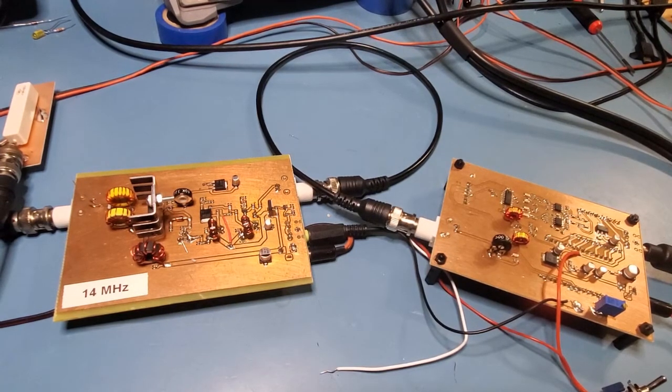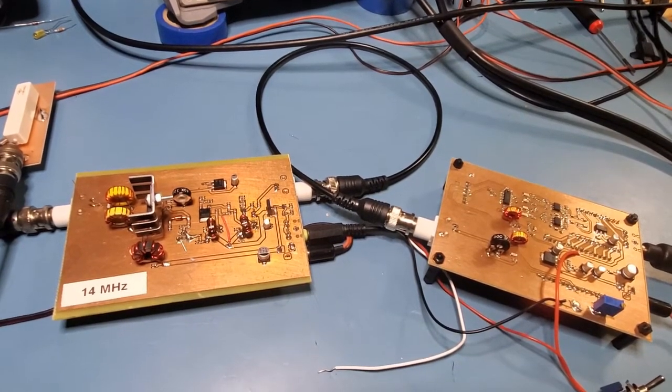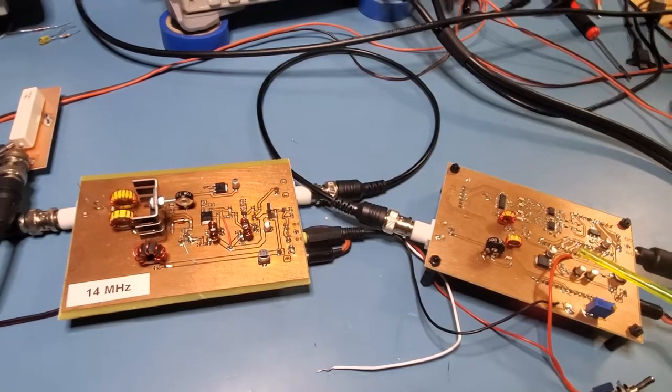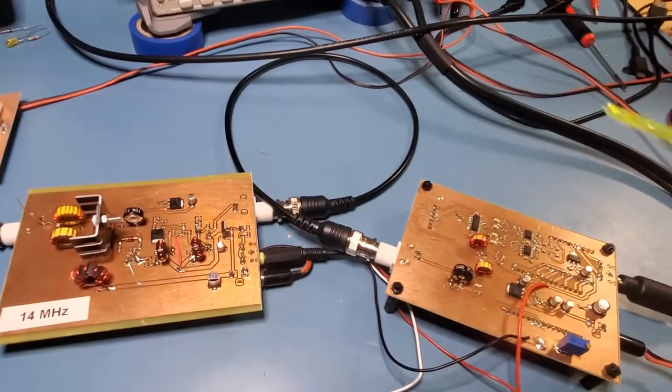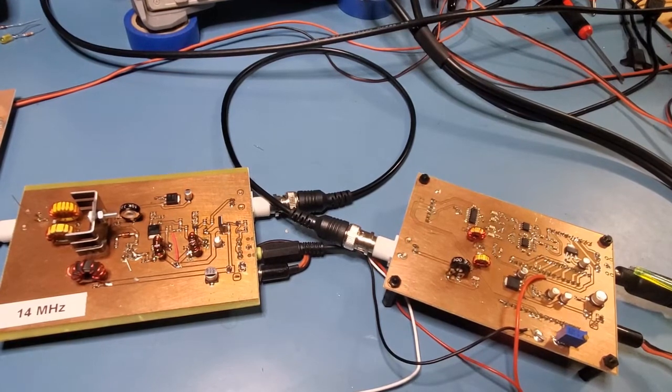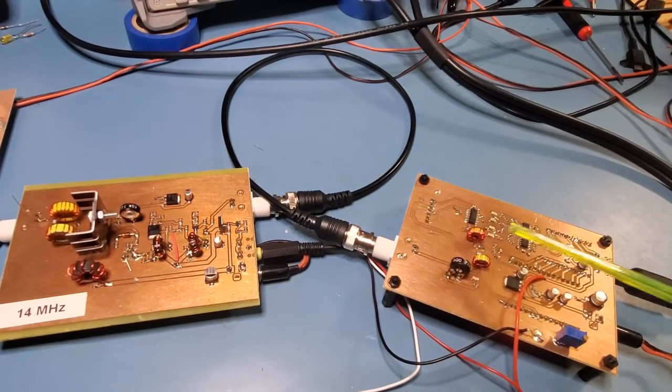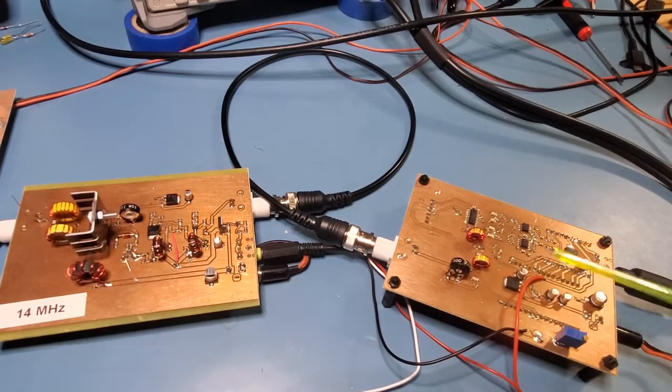So let's start with a simple two-tone test that I've done before with the Taylor modulator. Just to go through the setup here, I've got the audio signal coming in here, which is the 700 hertz and 1900 hertz tone. Now here's the Taylor modulator here,